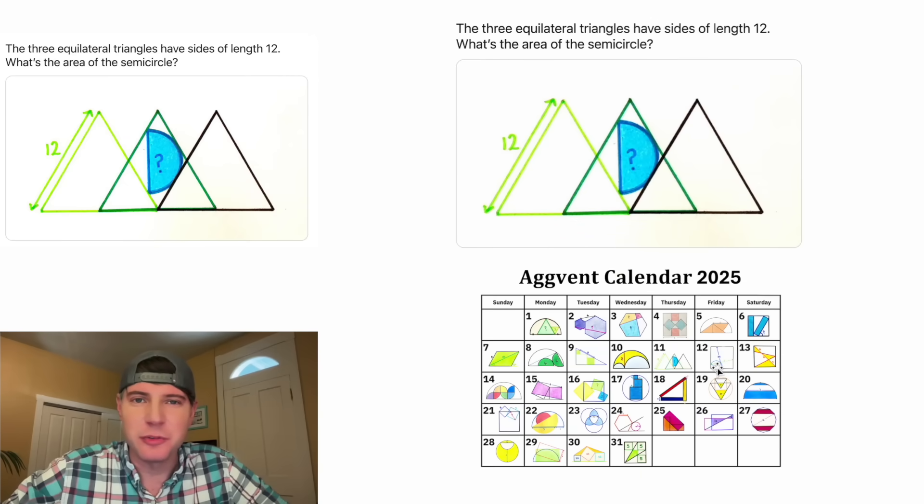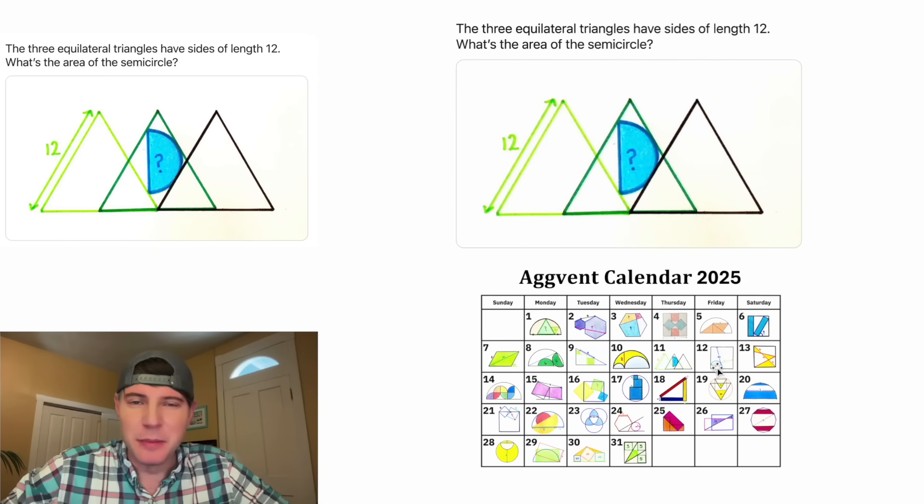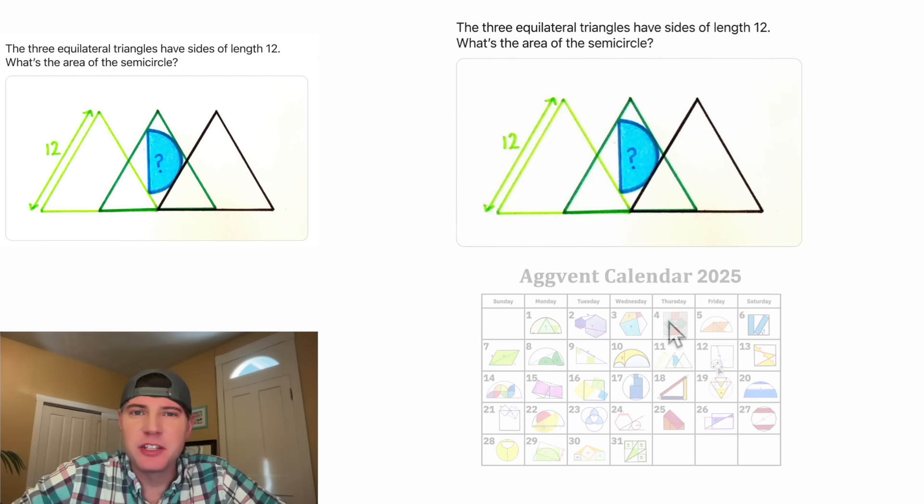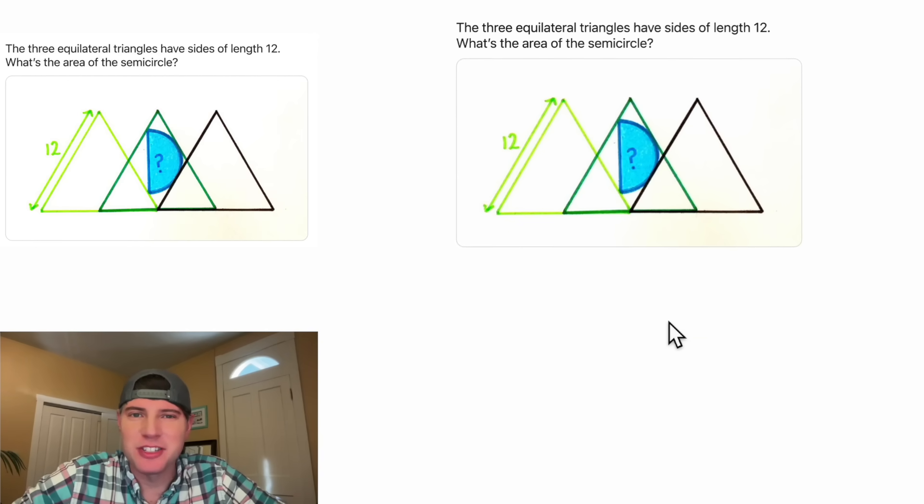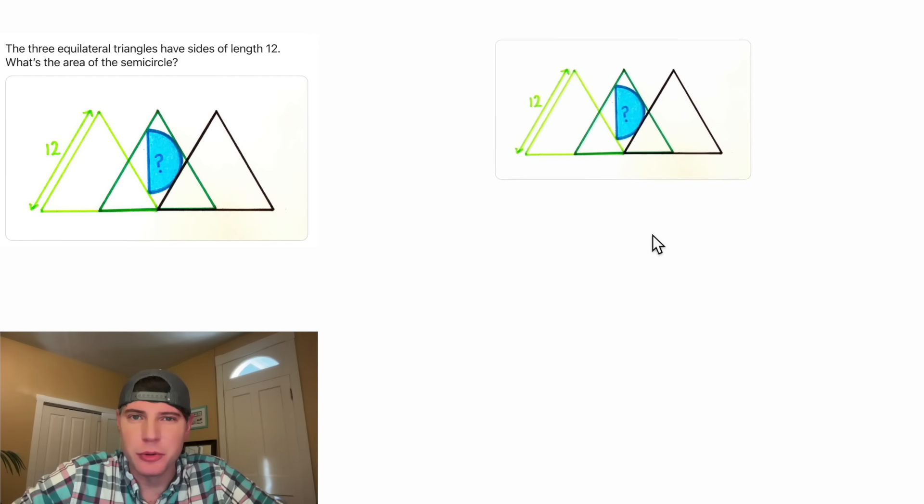This is day 11 of the 2025 AdVent calendar. For the month of December we're going to try to solve 31 Catriona Ag puzzles in 31 days, and if you want to try this one pause it right now because I'm going to solve it in 3, 2, 1.